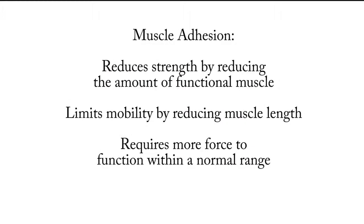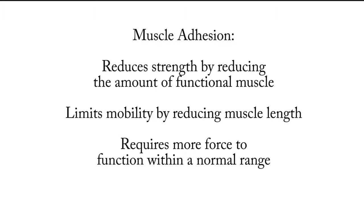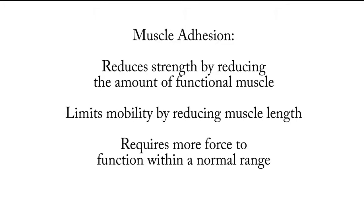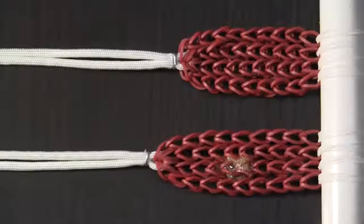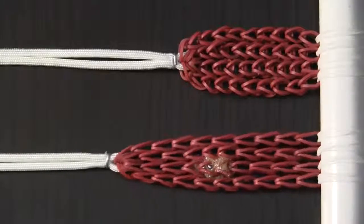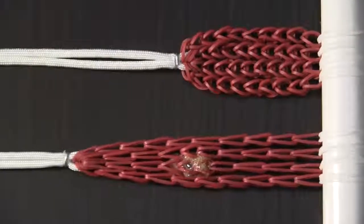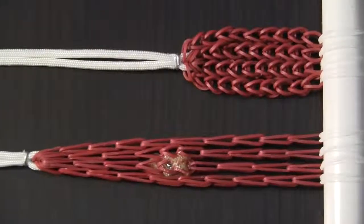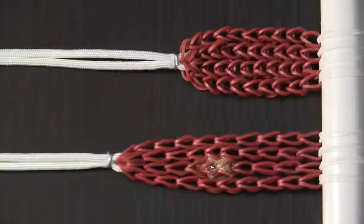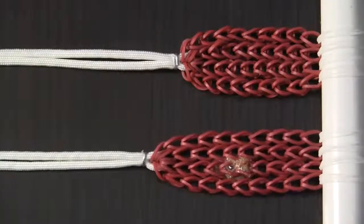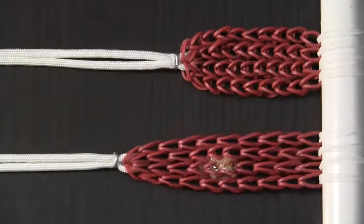The adhesion limits the strength by binding up and limiting the amount of contractile tissue. Adhesion limits the length by not allowing those tissues to lengthen. And it requires more force within the normal range to function.